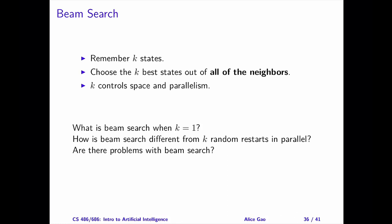Let's look at the answers. Question 1: when k equals 1, beam search is essentially greedy descent. It remembers one state and moves to the best neighbor at each time step.